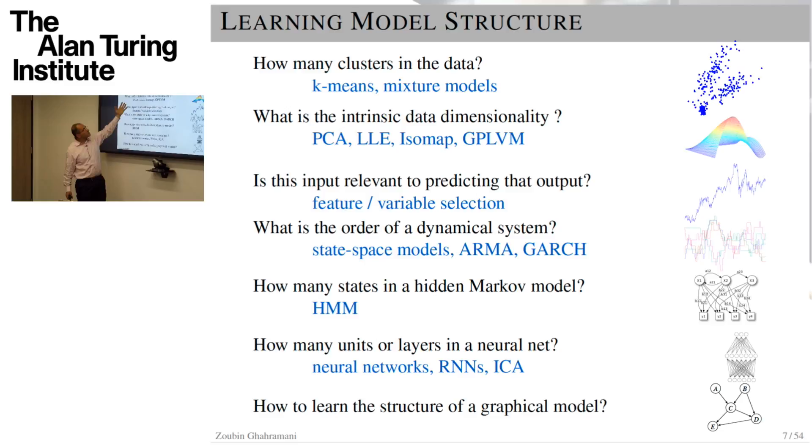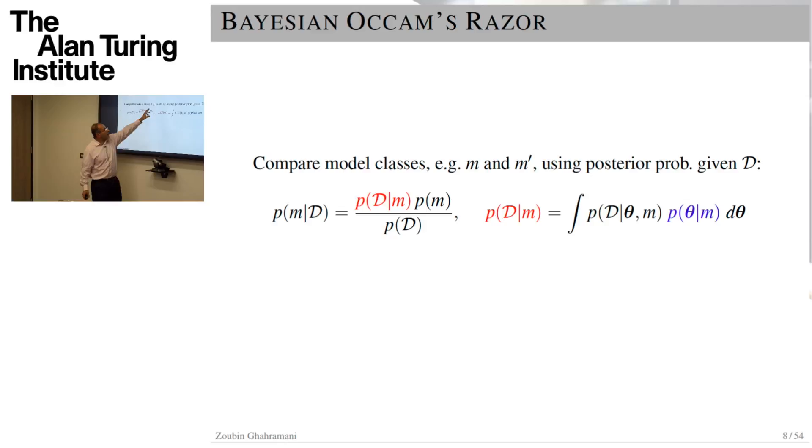This polynomials example is just a canonical example that occurs everywhere. I'm giving you more interesting practical examples like, how many clusters do we have in the data? How do we discover the intrinsic dimensionality of a manifold? Which features or variables should we select? How many states should we use in state space models or HMMs? If we're fitting a neural network, how many layers, how many hidden units, etc. All of these kinds of questions are model structure questions, just like the polynomials example.